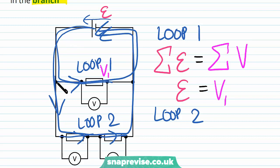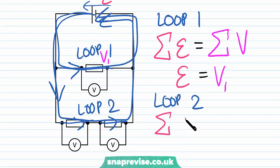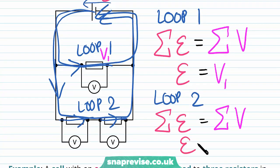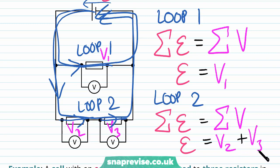For loop two, some charge carriers go through loop two, some through loop one. The sum of the EMF in loop two equals the sum of the potential differences of the components in that loop. The total EMF is just E from the cell. Across the two resistors in loop two we have V2 and V3, so we add them: E equals V2 plus V3. This shows how the energy obtained by charge carriers is split between two components when there's more than one component in a branch. Remember, EMF is energy transferred to charge carriers per unit charge, and potential difference is energy transferred from charge carrier to component per unit charge.